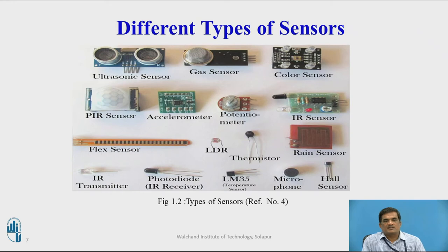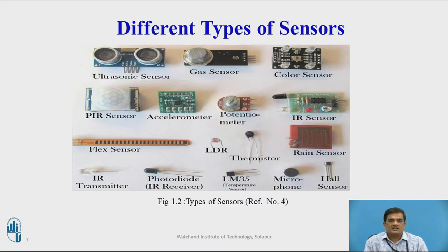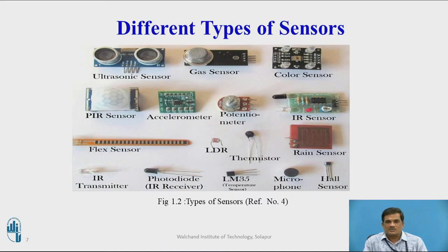There are different types of sensors. Based on functionality, sensors are classified into two types: analog sensors and digital sensors. Analog sensors convert physical energy into analog signals, while digital sensors convert physical energy into a digital output — that is, 0 or 1, or on/off state. Based on applications, sensors are further classified into different types.